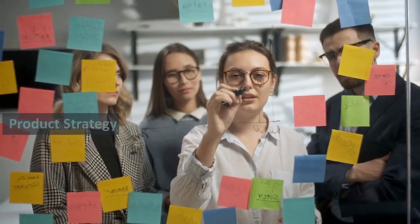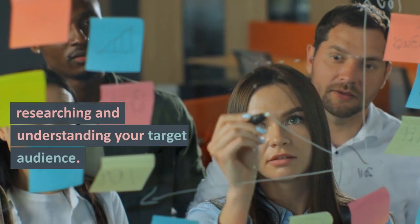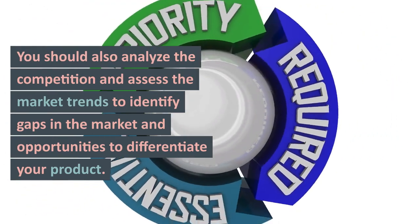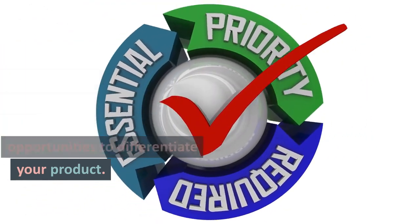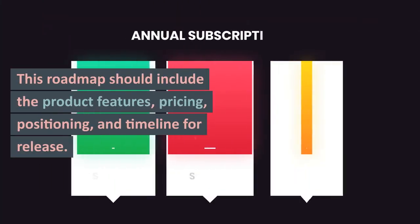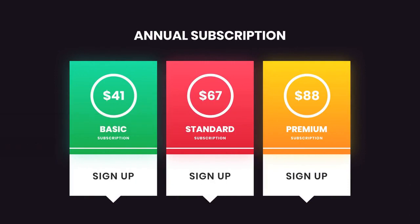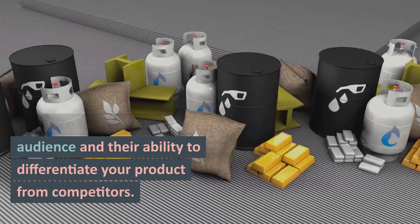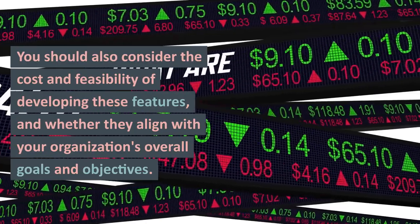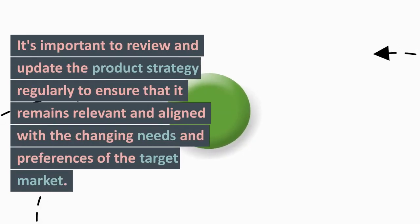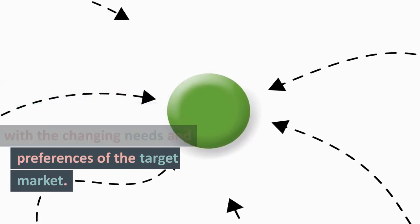Part 5: How to Develop a Product Strategy. To develop a product strategy, you should start by researching and understanding your target audience. This includes identifying their needs, wants, and pain points. You should also analyze the competition and assess the market trends to identify gaps in the market and opportunities to differentiate your product. Once you have a clear understanding of your target market, you can begin to develop a roadmap for your product. This roadmap should include the product features, pricing, positioning, and timeline for release. It should also consider the resources and capabilities of your organization. When developing the product roadmap, it's important to prioritize the features based on their importance to the target audience and their ability to differentiate your product from competitors. You should also consider the cost and feasibility of developing these features, and whether they align with your organization's overall goals and objectives. It's important to review and update the product strategy regularly to ensure that it remains relevant and aligned with the changing needs and preferences of the target market.